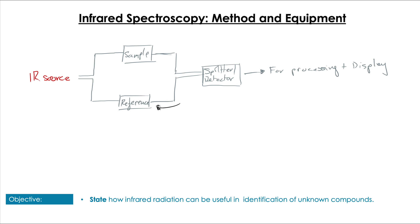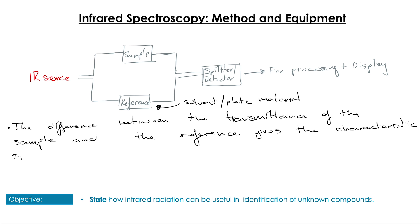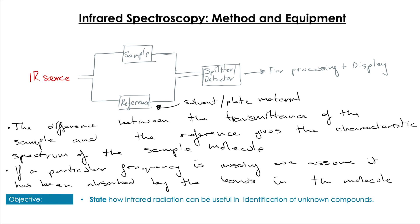The reference is usually the solvent that we've dissolved the sample in and then the signals are brought to a splitter and detector and then that information can be processed. The key here is we can compare the spectra of the reference the solvent or the plate material and the difference between the transmission of different wavelengths of infrared light between the sample and the reference tells us that if there is a particular frequency missing then we assume that that has been absorbed by the bonds in our sample.